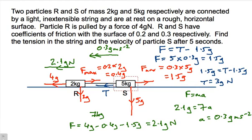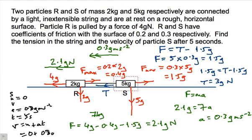Now we're left with finding the velocity of the particle after 5 seconds. That's a simple SUVAT. We know that we don't know what S is. We know the initial velocity is zero. We know the acceleration is 0.3G meters per second per second, and we know that the time is 5 seconds. So we now should be able to use a simple SUVAT to work that one out. So we can use, we want V, so we can use V equals U plus AT.